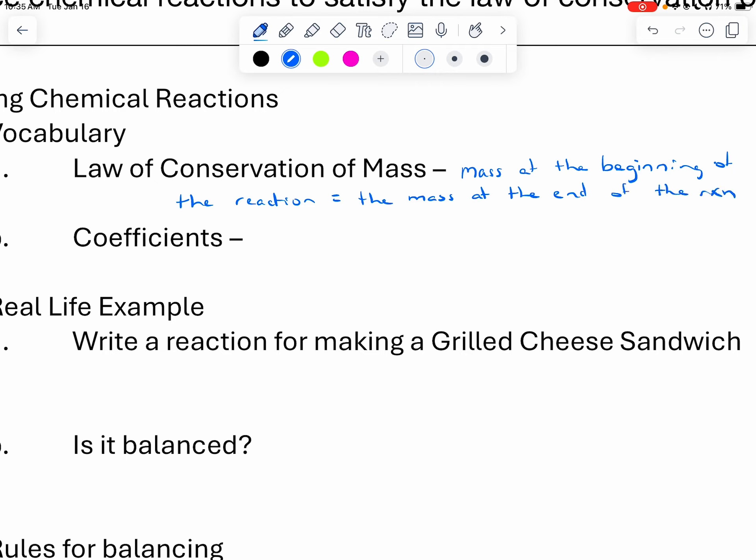The law of conservation of mass basically states that the mass at the beginning of the reaction equals the mass at the end of the reaction. So what we're saying is however much I had at the beginning of the reaction is however much I'm going to end with. That also says that I can't just lose an element somewhere in the reaction. So if I have carbon at the beginning of the reaction, I'm going to have carbon in some form at the end of the reaction.